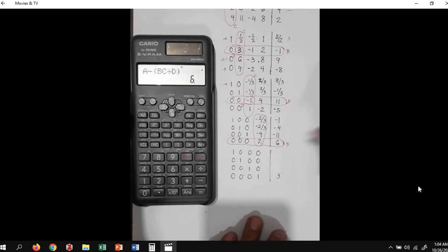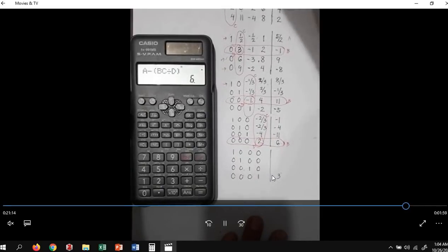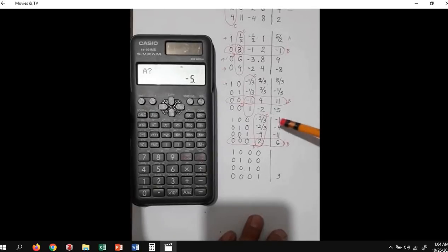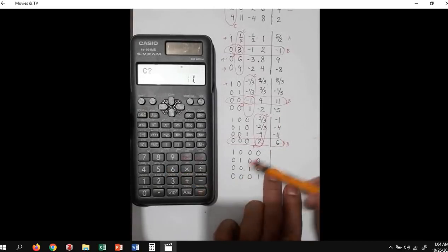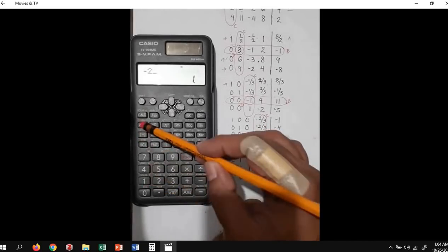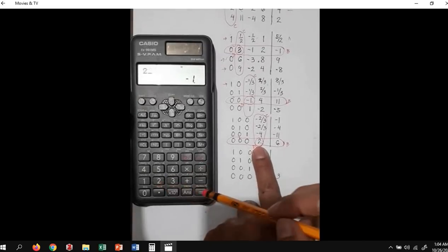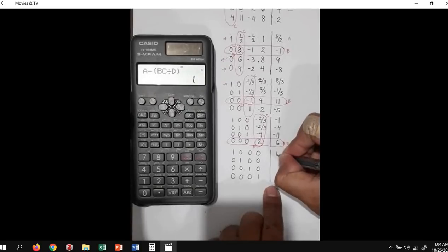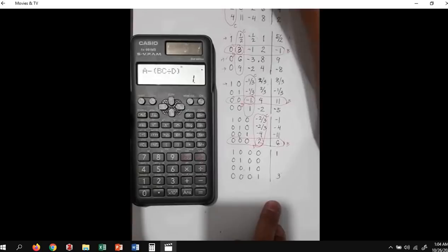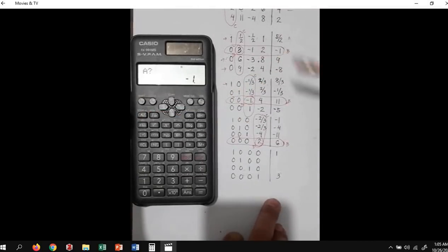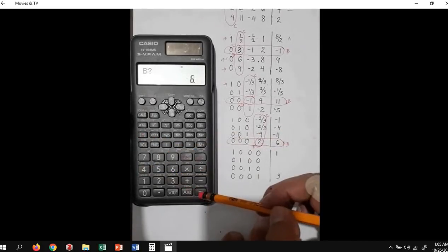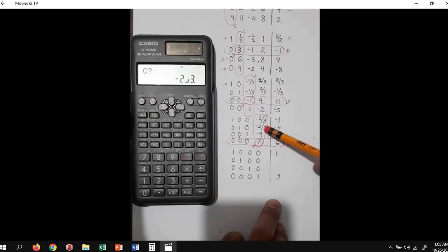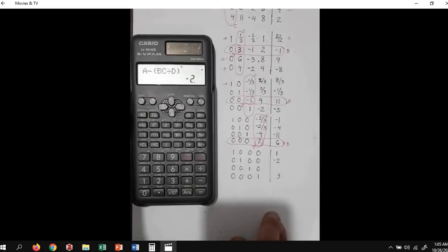So we'll compute for these values here. We'll press the calc function again. A is negative 1, B is 6, C is negative two-thirds. B is 2, equals. Value is equal to 1. Next, calc again: A is negative 4, B is 6, C is negative two-thirds, it is provided, just press enter, equals. And our D is 2. We have a value of negative 2.